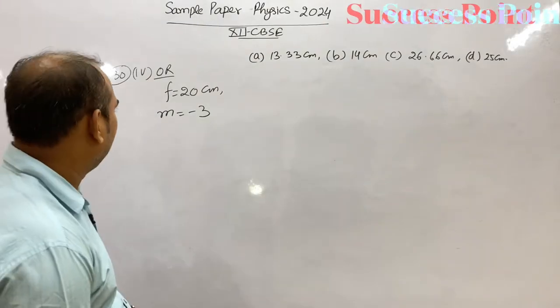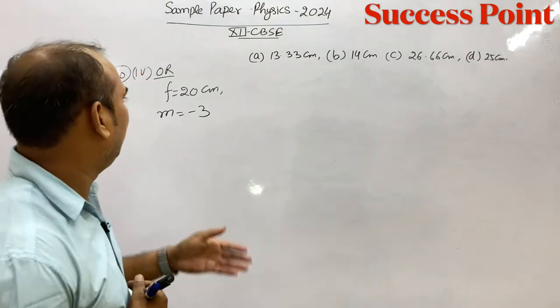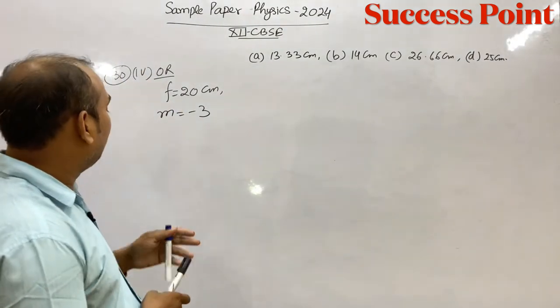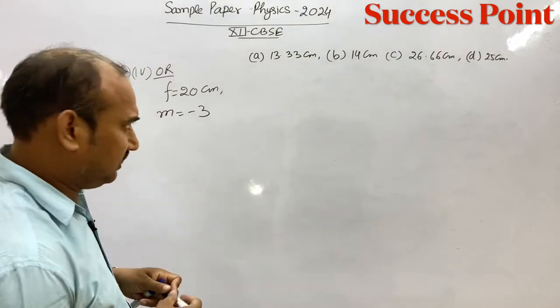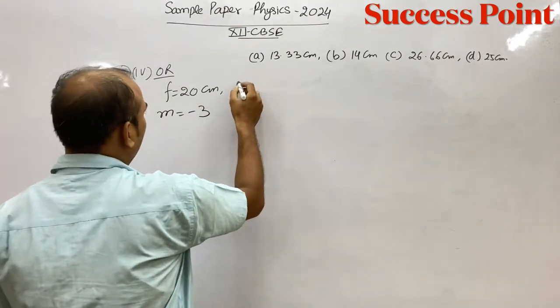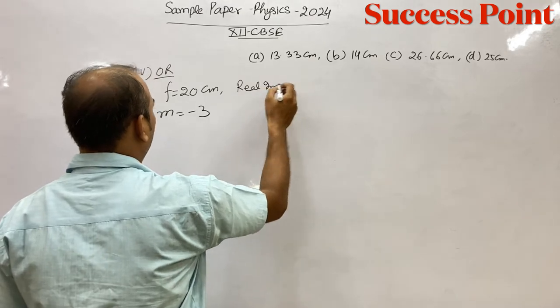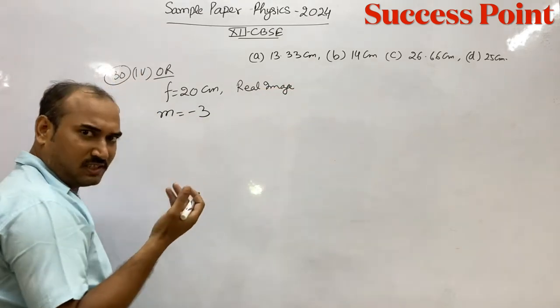This question is a convex lens, which has a focal length of 20 cm. And then, it is a real image. How is it? It is a real image. When the real image comes out, the magnification is negative.